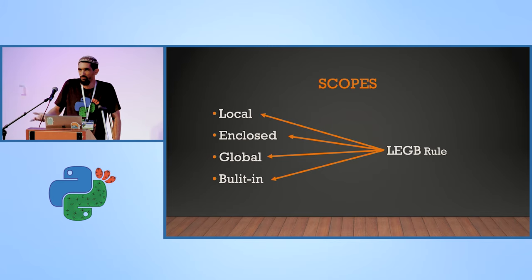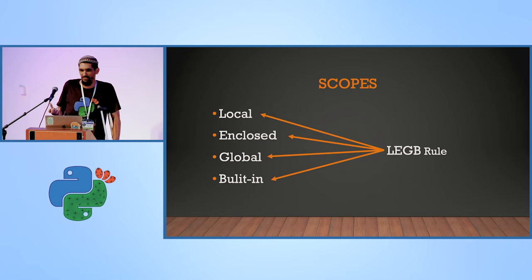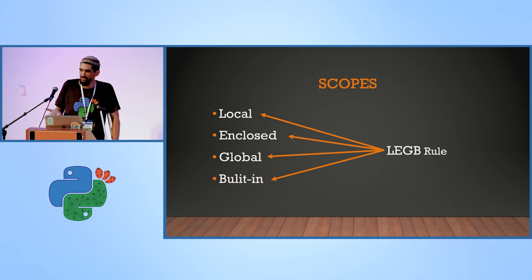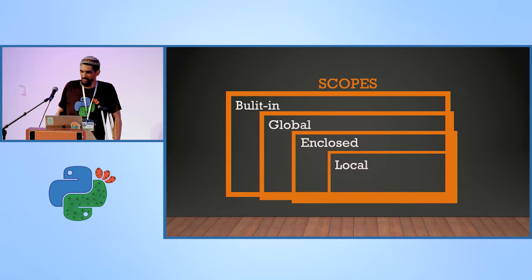The LEGB rule means this is the order that Python looks up variables. It looks first in the local scope in the same function, then in an enclosed function — the enclosed scope — then in the same module that the function was defined in, and last in the built-in scope. This is the LEGB, or L-E-G-B, and this is a more graphical way to view it, like zooming out.